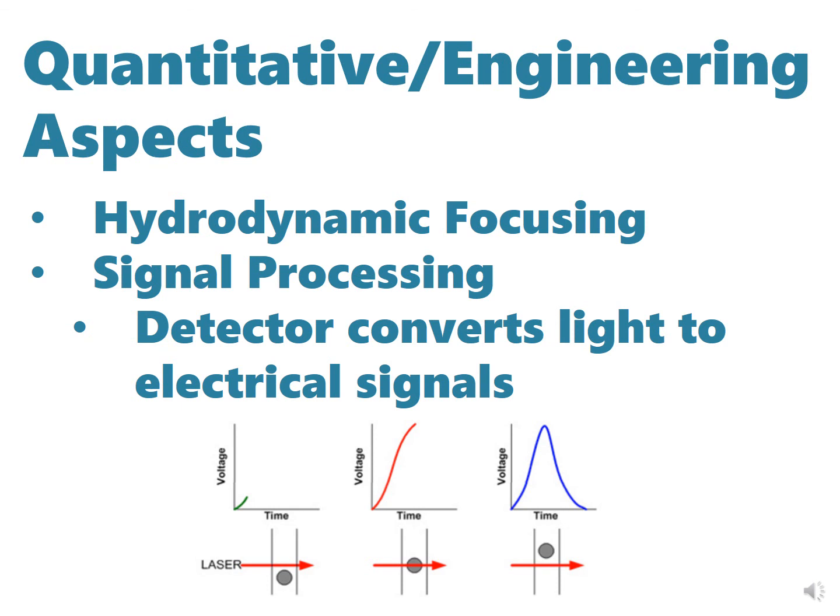The engineering aspects related to flow cytometry and FACS are related to hydrodynamic focusing where we can change the shear rates as well as the sample flow rates to get the perfect diameter for a single cell line. And the signal processing related to electronic systems gives us the detector which converts light to electrical signals based on a few parameters.